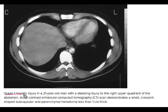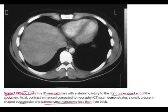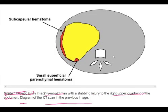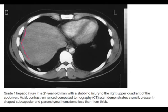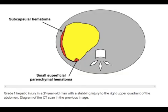This is a grade 1 hepatic injury in a 21-year-old man with a stabbing injury in the right upper quadrant of the abdomen. The axial CT scan demonstrates a small subcapsular and parenchymal hematoma less than 1 centimeter thick. In the diagrammatic representation you can see the subcapsular hematoma and the small superficial parenchymal hematoma — note this is a superficial parenchymal hematoma, not an intraparenchymal hematoma.